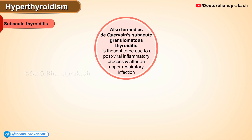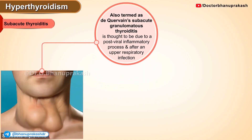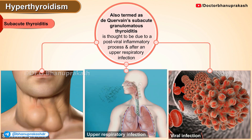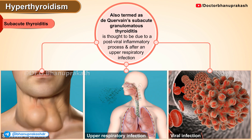Subacute thyroiditis, otherwise termed as de Quervain's subacute granulomatous thyroiditis, is thought to be due to a post-viral inflammatory process after an upper respiratory infection.